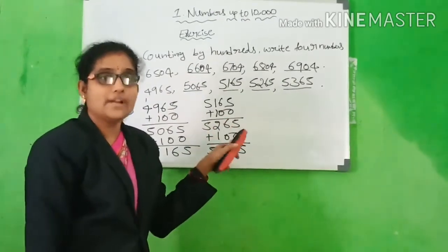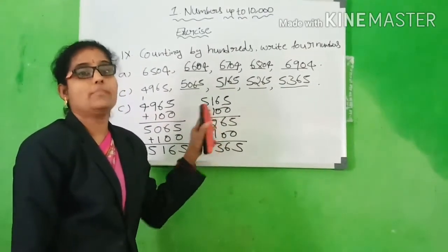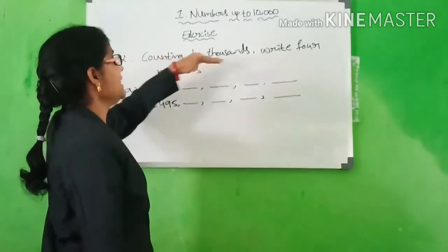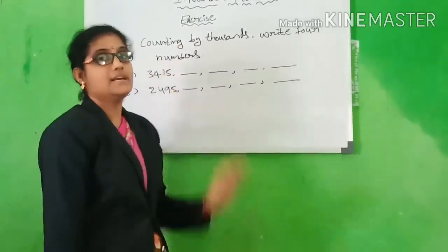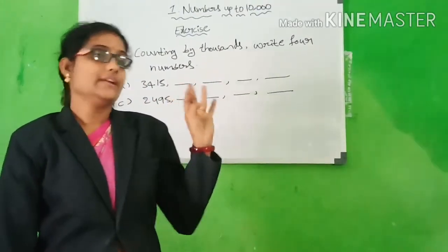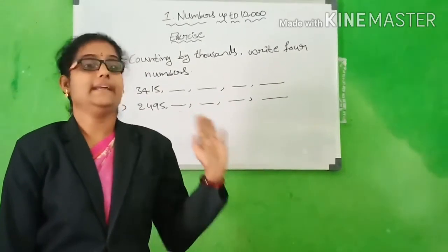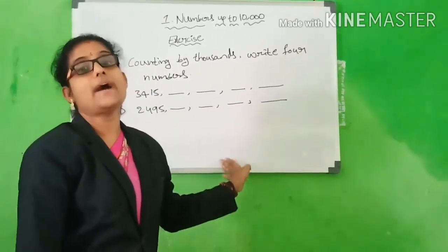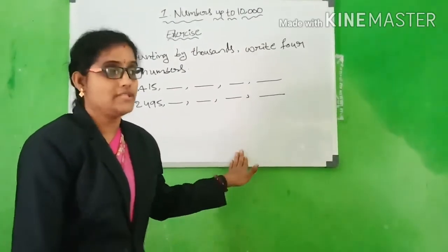Do all of you understand this? Okay. Copy this one. 10th bit: counting by thousands, write 4 numbers. In the 8th bit you counted by 10, in the 9th bit you added 100 — now you have to add 1000.